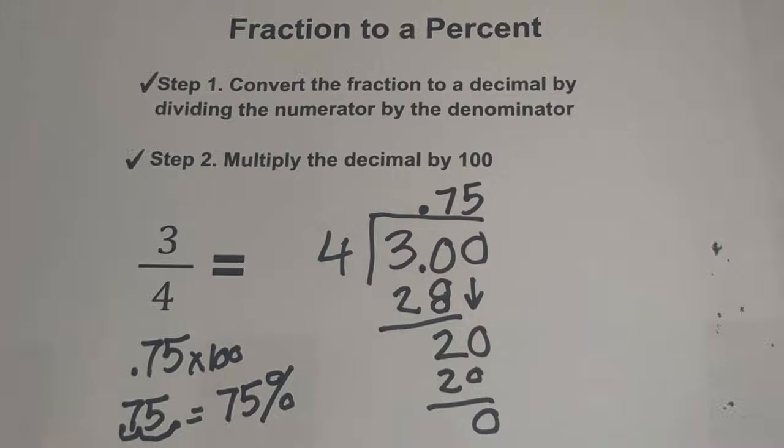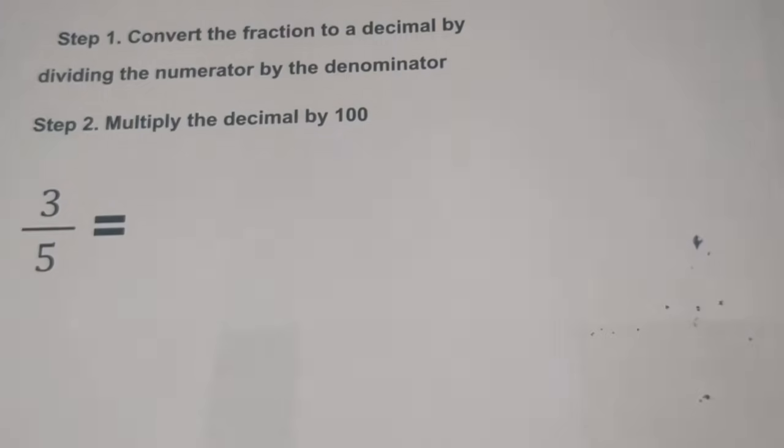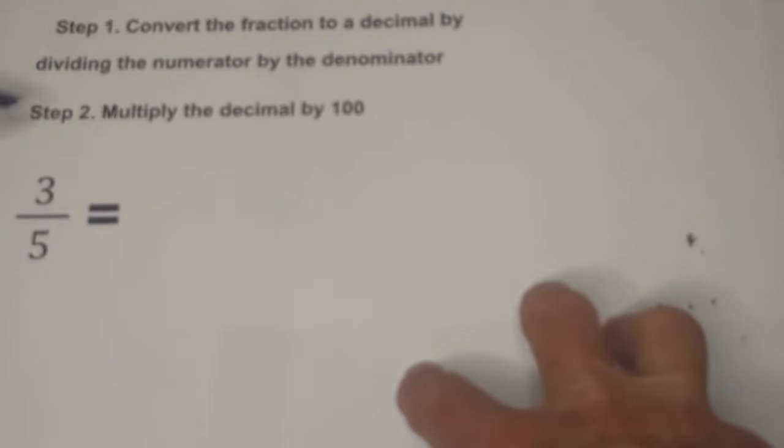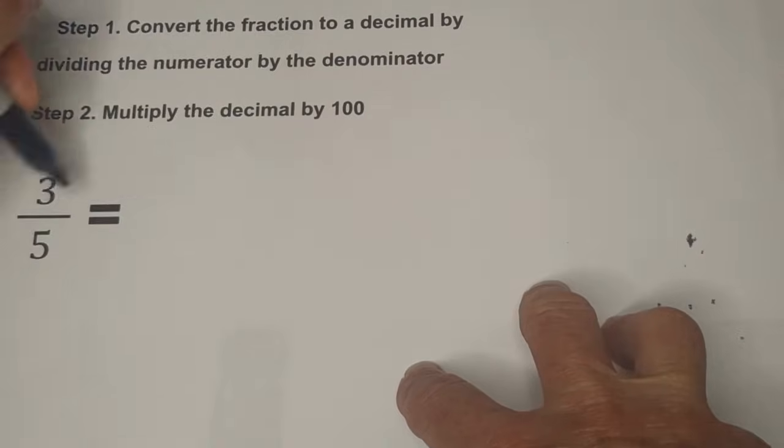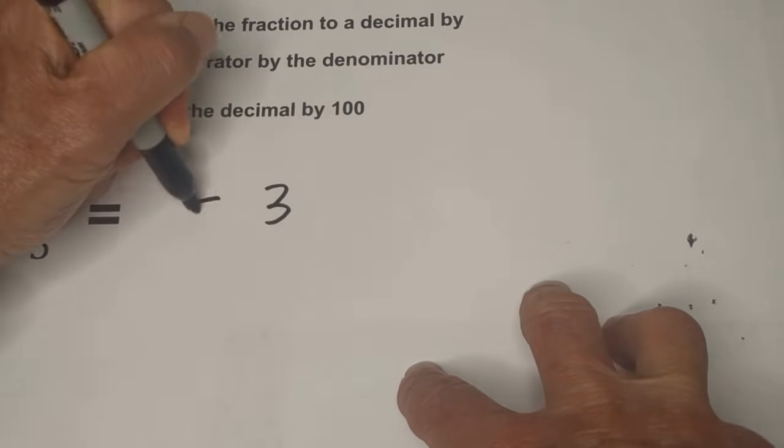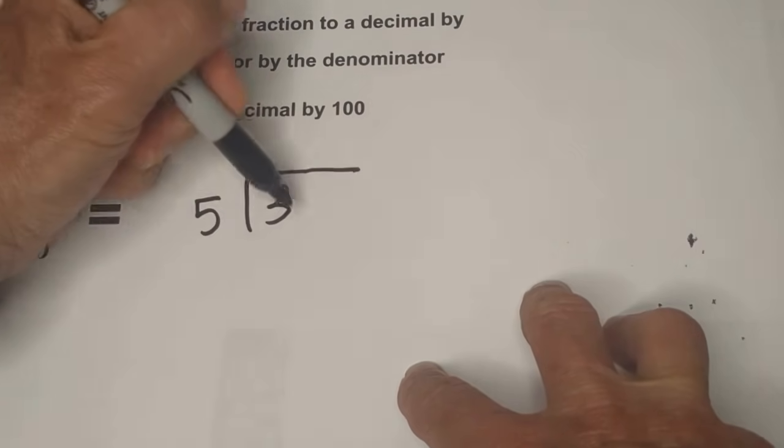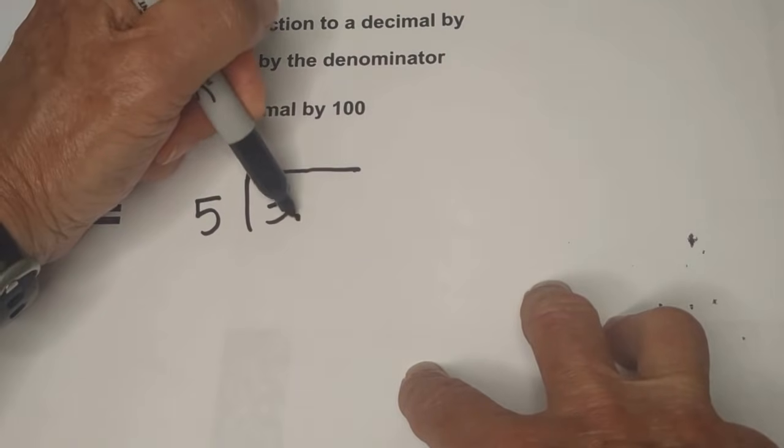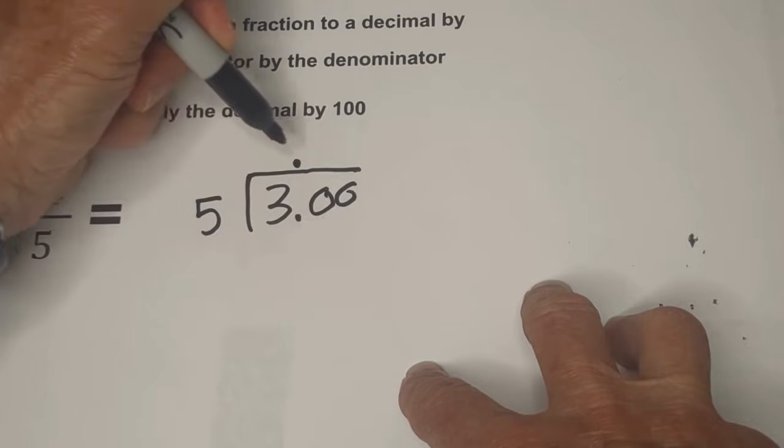Let's work another example. With this one, let's follow the same step. We're going to convert the fraction to a decimal and then we're going to multiply the decimal by one hundred. So let's go, numerator of three divided by the denominator of five. Five is greater than three. So let's add some zeros, move the decimal straight up.